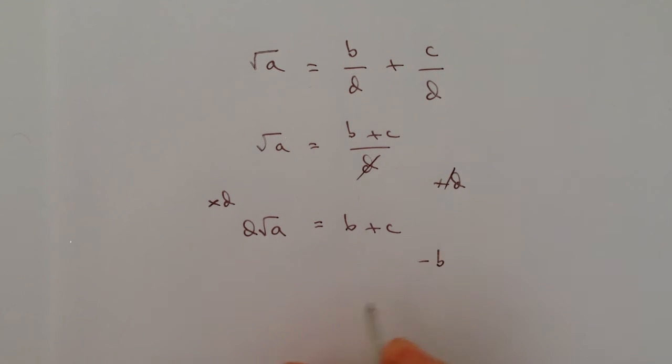So if I minus B from this side and minus B from this side, I can write C, which is the subject, which is what I'm looking for. On the left hand side I can write that as minus B plus D root A.